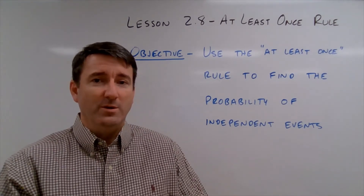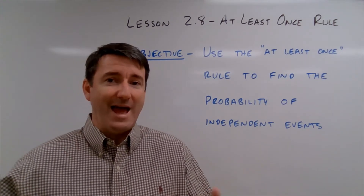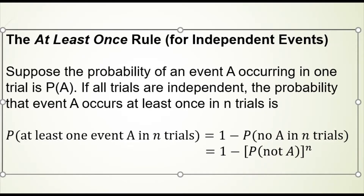So let's start by defining a rule that's going to help us find the probability of independent events happening at least once. The at least once rule relies on the fact that an event is either going to happen at least once or it's never going to happen. One of those two things is certain to be the case, so their probabilities add up to one. So the probability of an event happening at least once plus the probability of that event never happening is equal to one. So we can find the probability of an event happening at least once by finding the probability that that event never happens and then subtracting it from one.